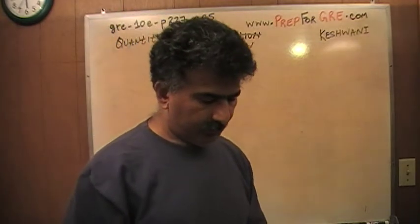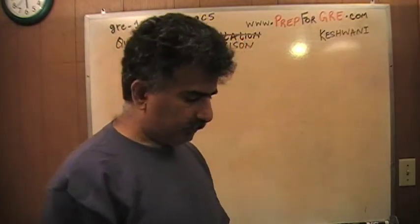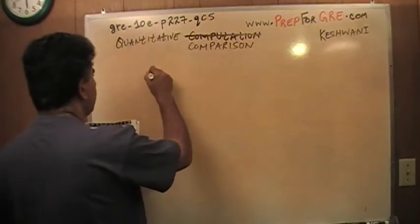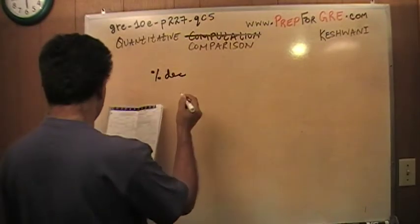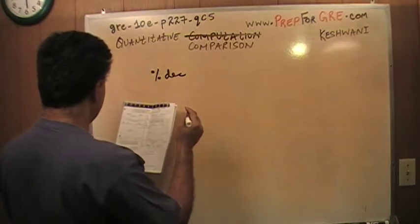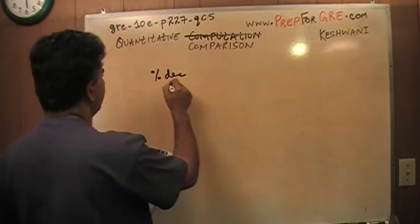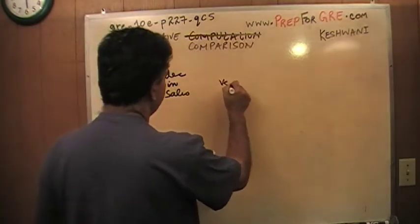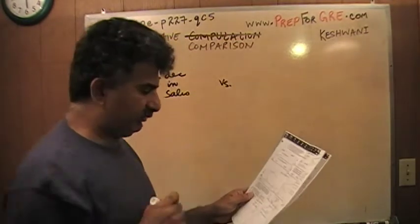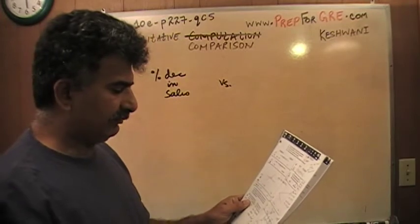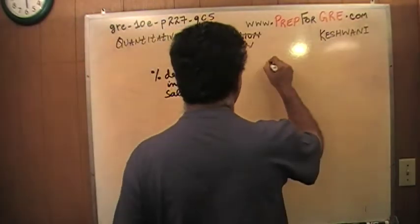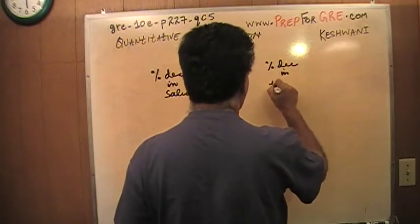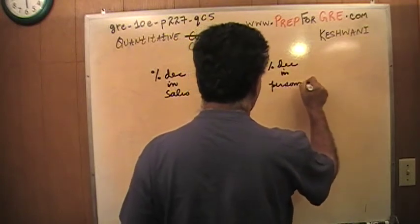We are asked to compare in column A, percentage decrease in the number of company K's monthly sales versus the percentage decrease in the number of company K's sales personnel. Okay, percentage decrease in the personnel.